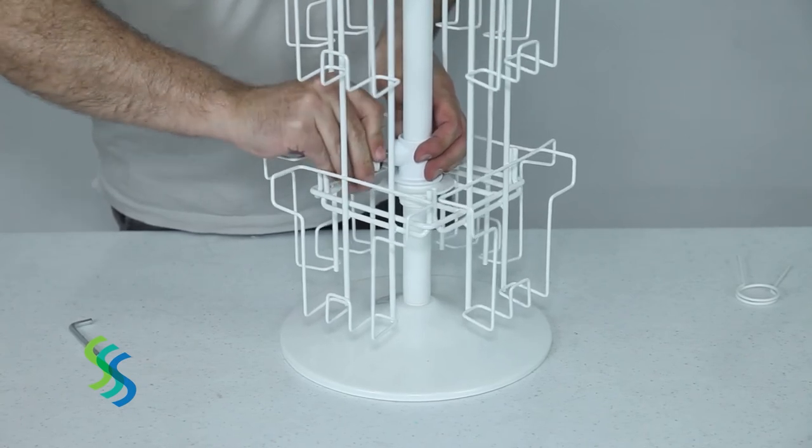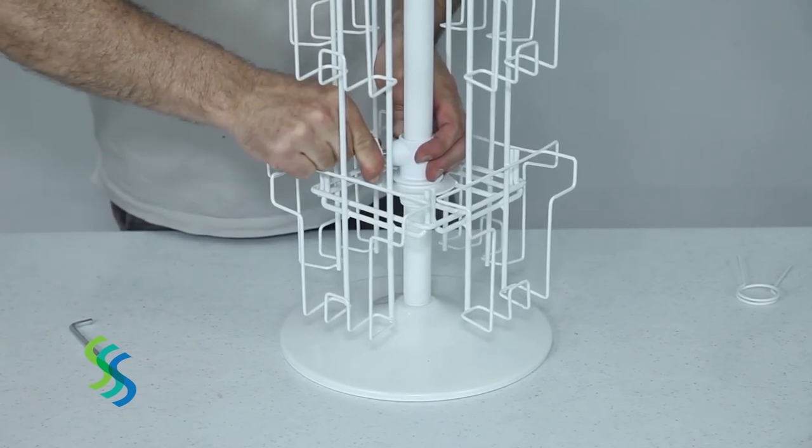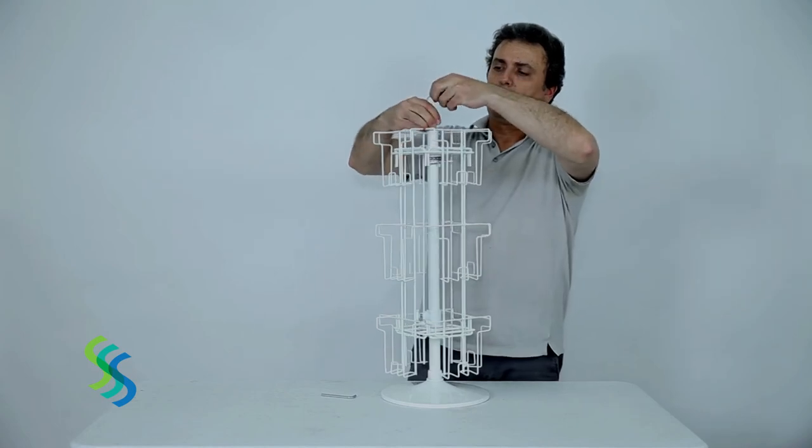Secure the assembly of this tabletop unit by tightening the spinner lock. Tighten the spinner lock against the top of the lower square frame.